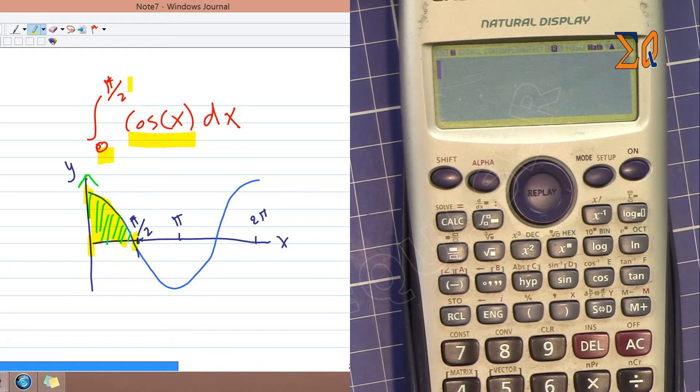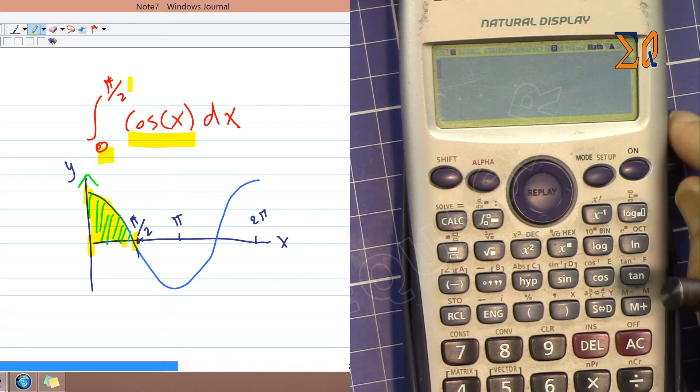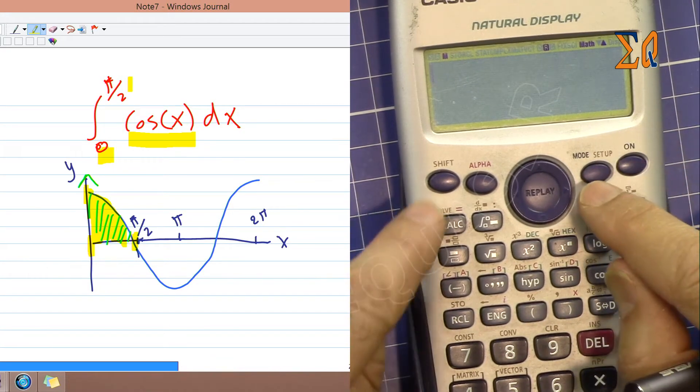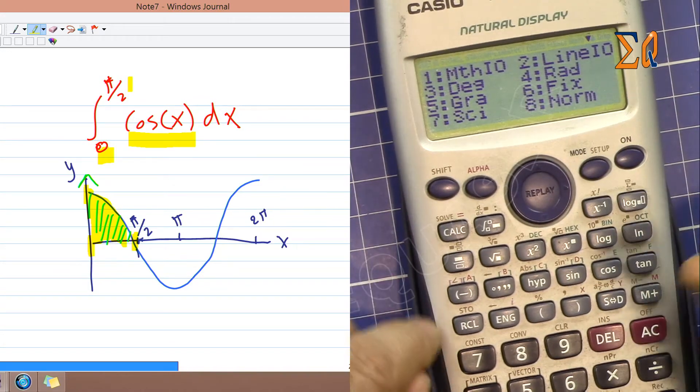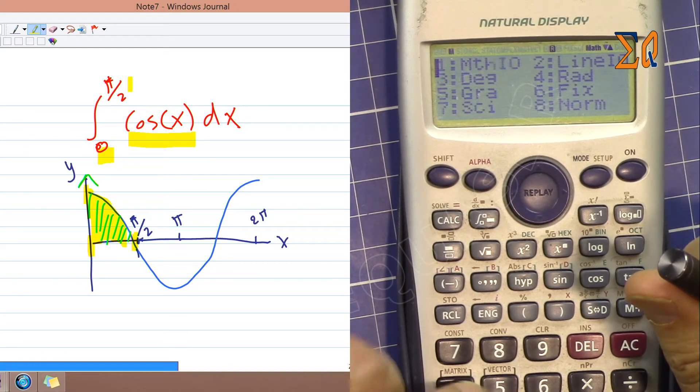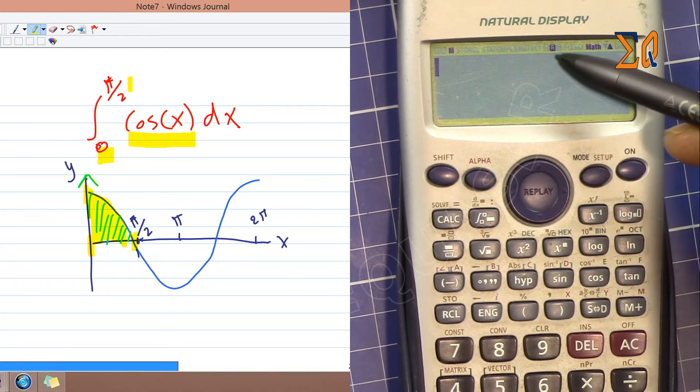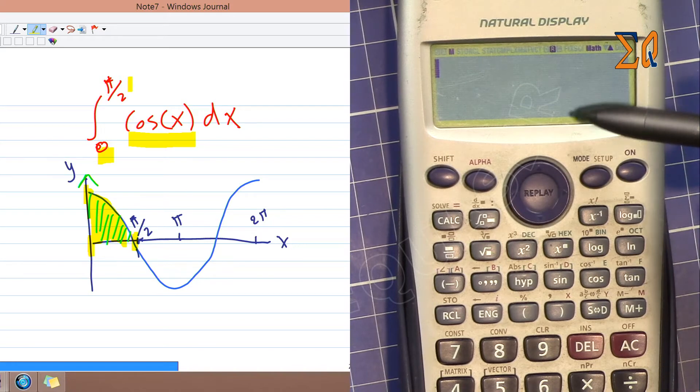Make sure your calculator is set to radian mode. To do that, press shift and setup, then number 4 for radian. Press 4, and you'll see R displayed. The calculator is now in radian mode.